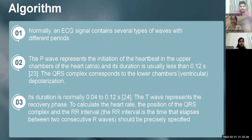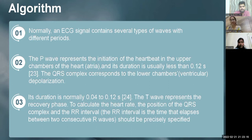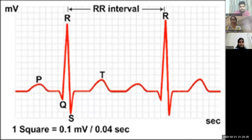Coming to the algorithm: an ECG signal contains several types of waves in different periods. The P wave represents the initiation of the heartbeat in the upper chambers of the heart, with a duration usually less than 0.1 seconds. The QRS complex corresponds to the depolarization of the lower chambers, with a duration normally of 0.04 to 0.12 seconds. The T wave represents the recovery phase. To calculate the heartbeat, the position of the QRS complex and the RR interval are used to specify the heartbeat of the patient.